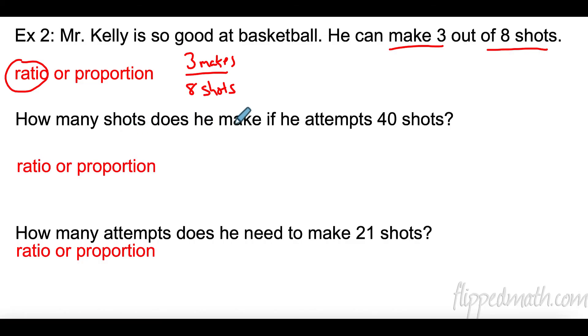How many shots does he make if he attempts 40 shots? So, now we can make a proportion out of this. We know three makes for every eight shots. And this is where the labeling comes in really handy. I need a number of makes on the top. And I need a number of shots on the bottom. So, this is 40 attempts, 40 shots. So, that goes in the bottom. And I don't know how many he made.